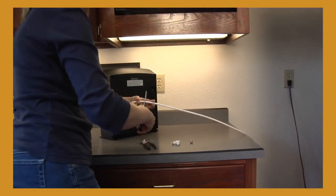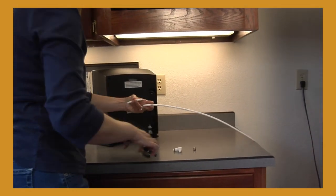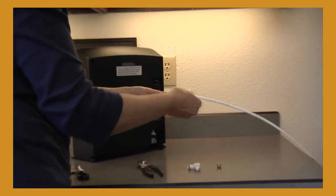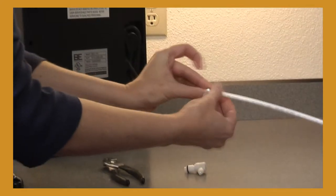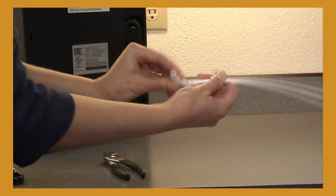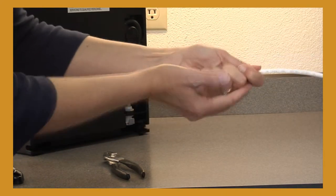Measure enough line to reach your coffee maker and cut. Slide the compression nut over the line. Slide the line onto the barbed fitting and tighten with pliers.